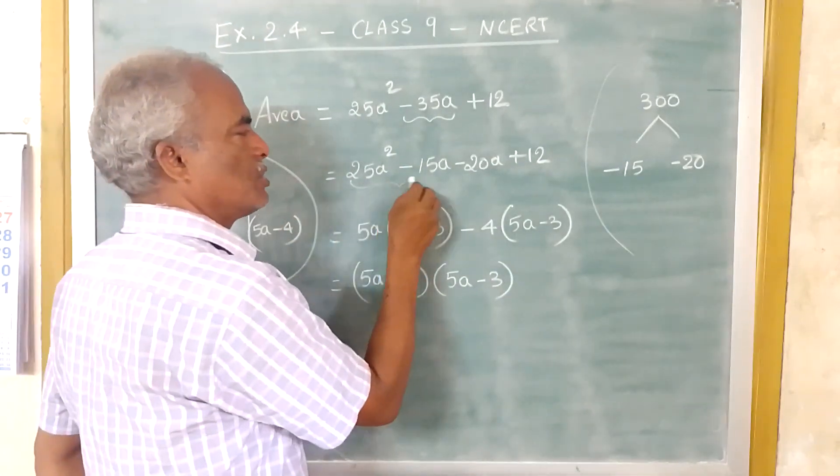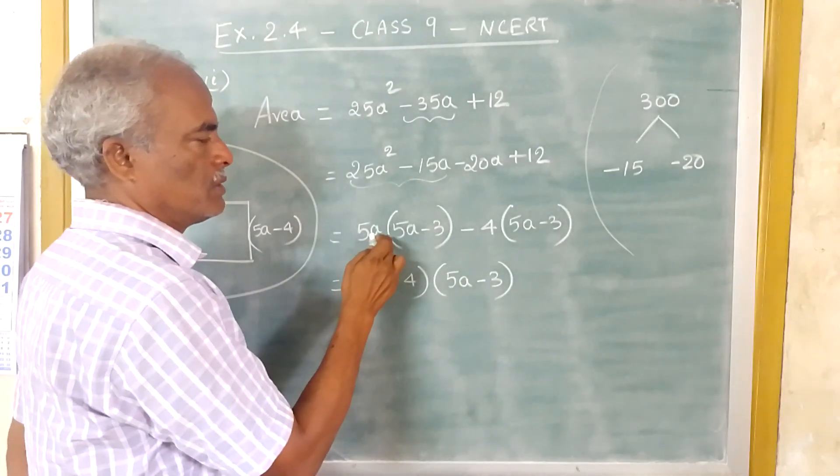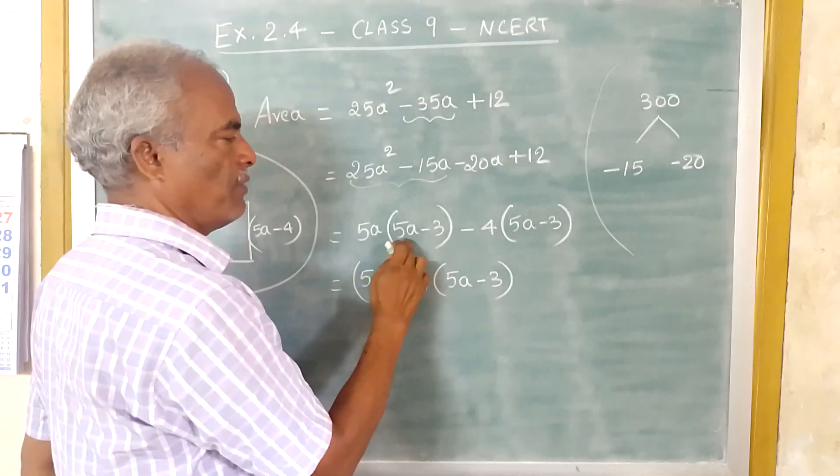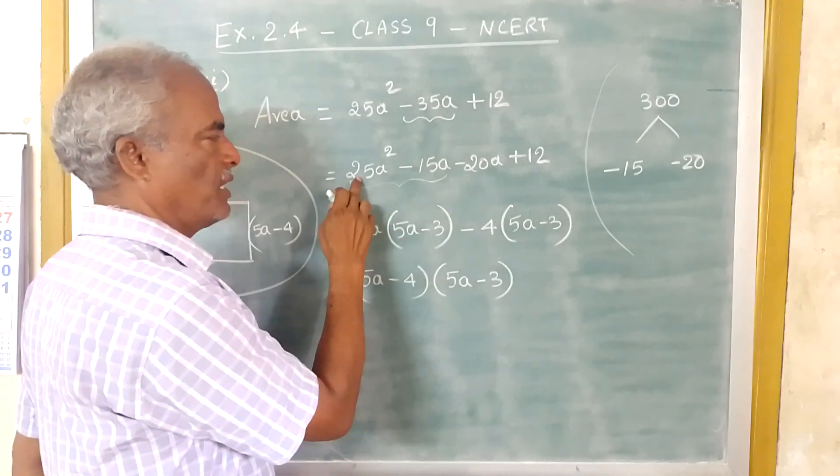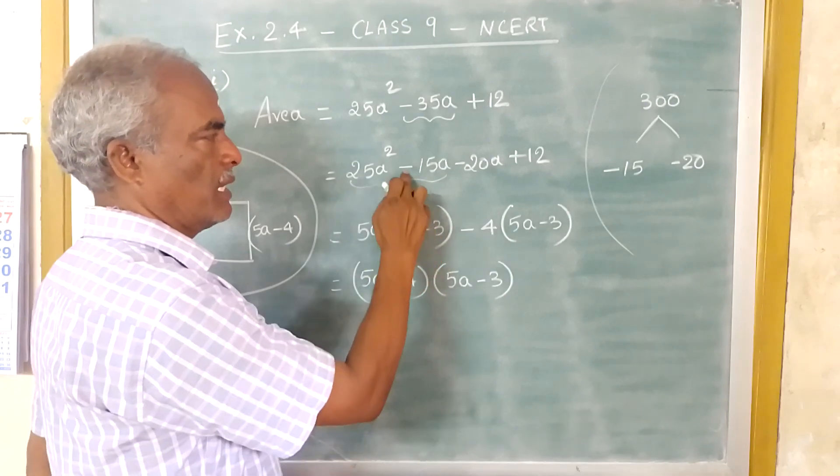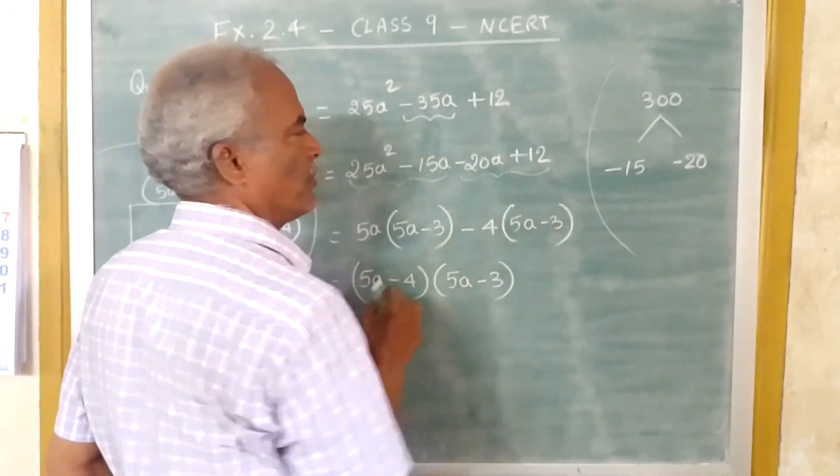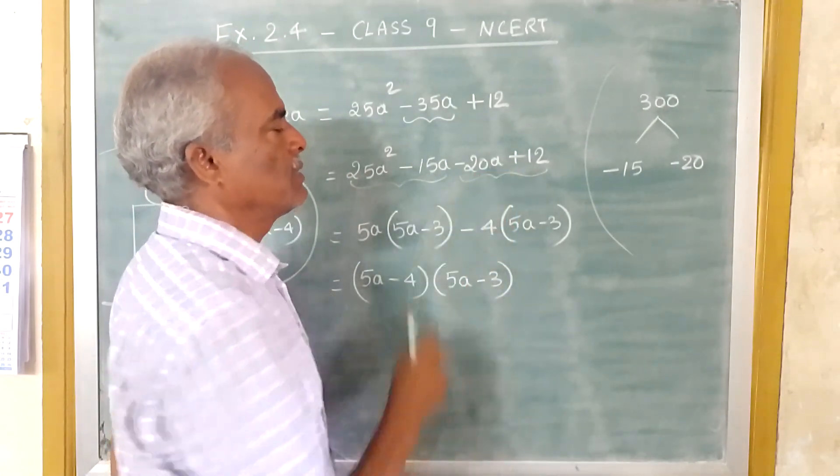Now if you take these two terms, 5A is common. So inside the bracket you will be having 5A minus 3, because 5A into 5A is 25A square. 5A into minus 3, so you will get minus 15A.